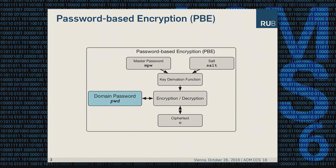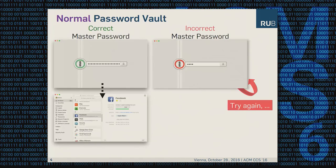I want to make sure you understand the difference between a normal password vault and a cracking-resistant one. If you use a normal password vault and enter the correct master password, the vault checks the password and, if correct, decrypts the vault and shows the credentials in plain text. However, if you use an incorrect master password, the vault denies access and the user is prompted to try again.